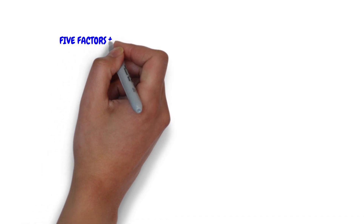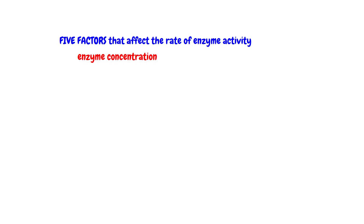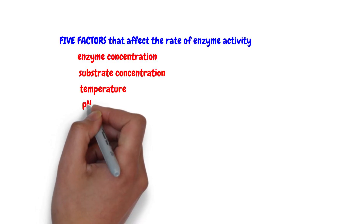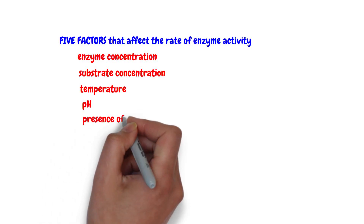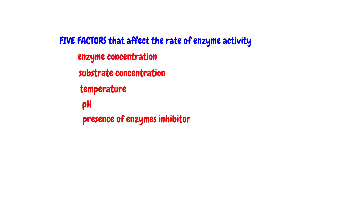To recap, there are five factors that affect the rate of enzyme activity. First, enzyme concentration — as it increases, the rate of reaction also increases. Second, substrate concentration — as it increases, the rate of reaction increases until the point of saturation is reached. Third, temperature — enzymes work best at 37 to 40 degrees Celsius; low temperature makes enzymes inactive and high temperature denatures them. Fourth, pH — each enzyme has its own optimal pH value, working in acidic, neutral, or basic environments. Fifth, the presence of enzyme inhibitors decreases the rate of reaction.